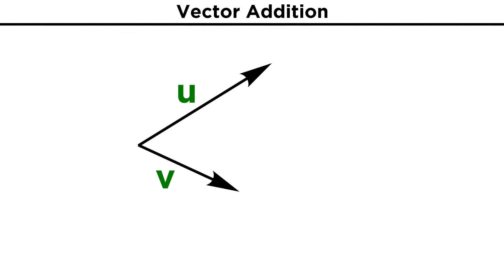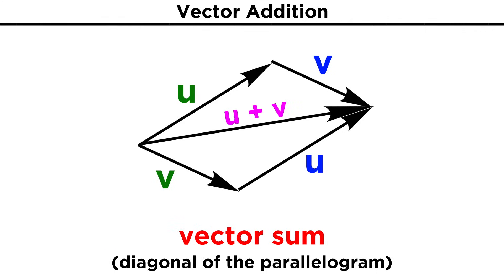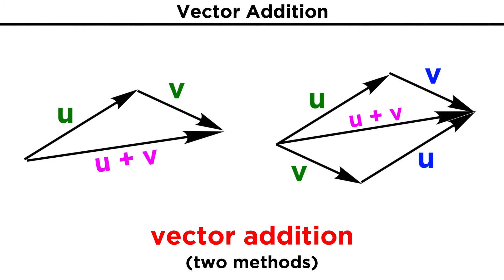We don't necessarily have to draw triangles though. Let's say U and V start at the same point. Let's duplicate U and V, and move them so as to form a parallelogram, like this. Now the sum of the two vectors, U plus V, can be represented as the diagonal of the parallelogram. So there are a number of ways to represent vector addition geometrically.